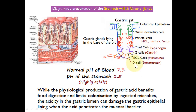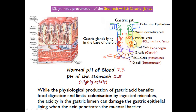Further down are D cells, which secrete somatostatin — related to the growth hormone system we studied in the endocrine system. Somatostatin secreted by D cells at the base of the gastric pits has inhibitory effects: it inhibits production of hydrochloric acid by parietal cells, and also has inhibitory effects on many glands throughout the gastrointestinal tract.